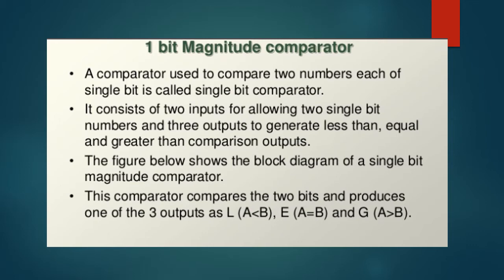This comparator produces one of the three outputs as L (A less than B), E (A equal to B), and the final output is G (A greater than B).